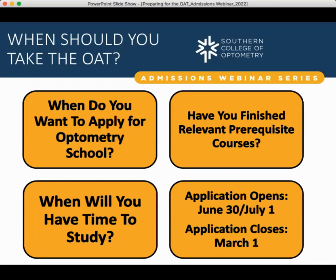Have you finished relevant prerequisite courses? We recommend taking at least introductory levels of the courses tested on the exam prior to actually taking it. It won't be in your best interest to study for the physics section of the OAT without ever having taken a physics course at an undergraduate level. So if you haven't taken basic biology, physics, or organic chemistry courses yet at an undergraduate level, you may be advised to wait until you can take those courses to build a solid foundation.